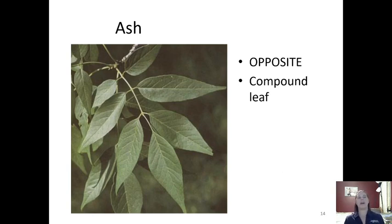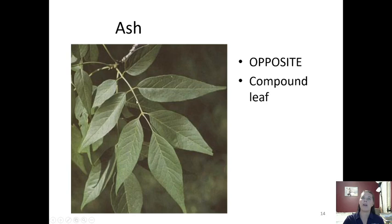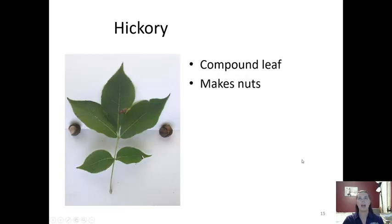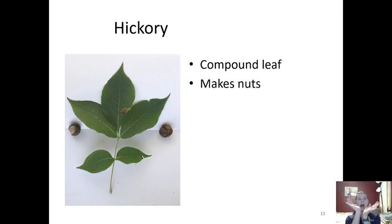Next is ash. Ash is part of our MAD group, so just like maples it has opposite leaf branching, but this time it's compound — instead of having one entire leaf, the whole structure with little leaflets coming off of it is the leaf of ash. You can see it's opposite the other leaf coming across on the opposite side. Our other compound leaf is hickory, however hickory is not opposite — it's not in MAD — so it's going to have alternate branching. If the branches are alternate, with one leaf coming off here and the next down the stem, you're looking at hickory. If they're opposite and compound, it's ash.